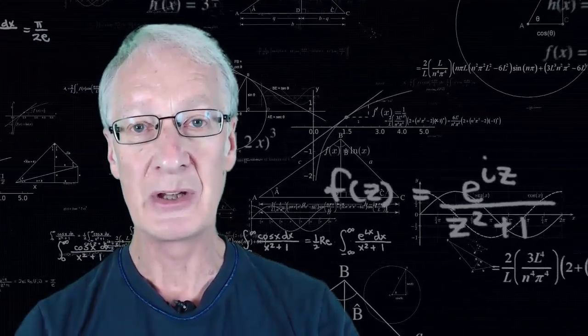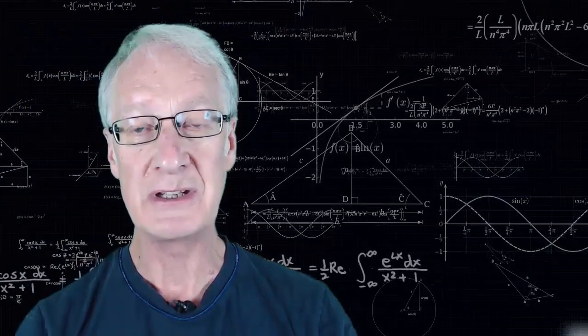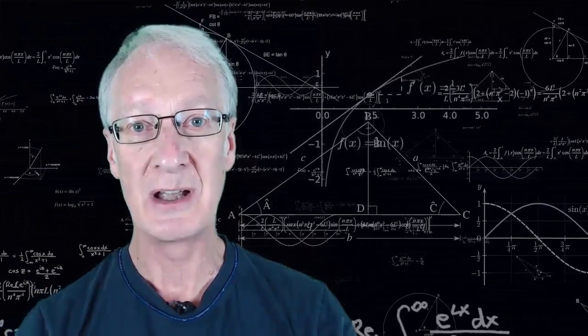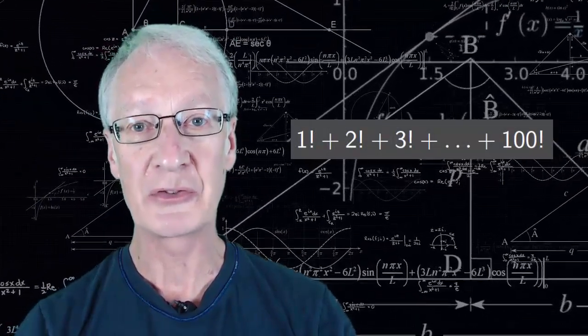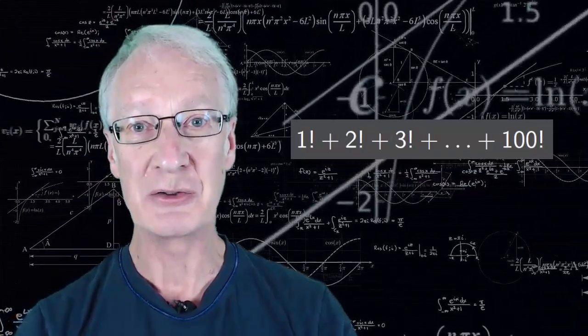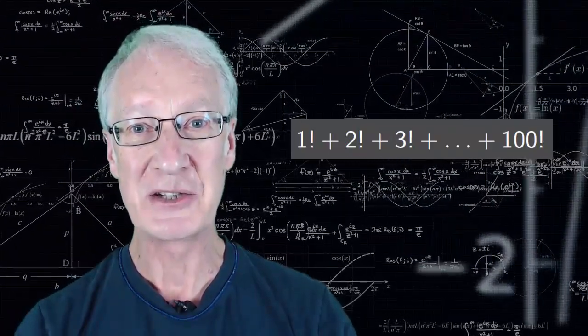The problem is to find the unit digit, that's the last digit, of the sum of the factorials of the first 100 natural numbers. Let's do the maths.